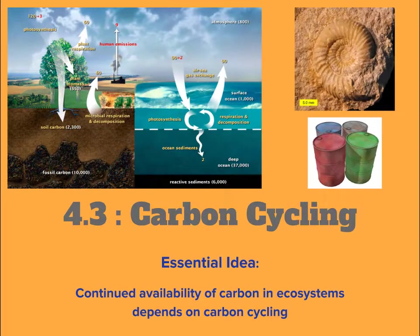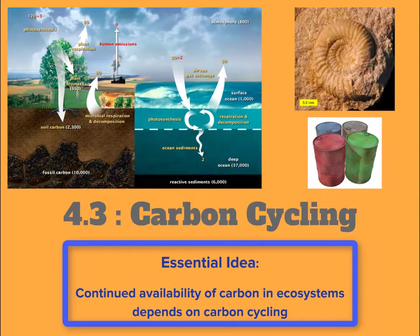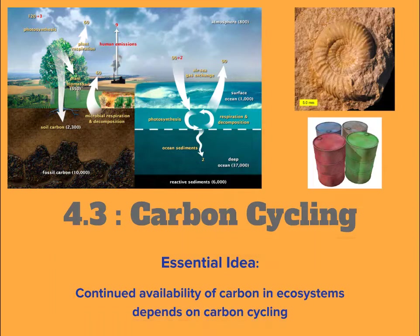I did not write this poem — I couldn't actually find out who did — but it's so relevant for our topic today, which is 4.3, all about the way that carbon cycles. Carbon is essential for life and is one of the main nutrients. As a nutrient, it gets recycled within an ecosystem, and on a large scale, the Earth itself helps to cycle carbon. The essential idea here is that continued availability of carbon in ecosystems depends on carbon cycling.